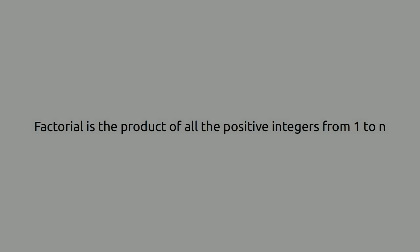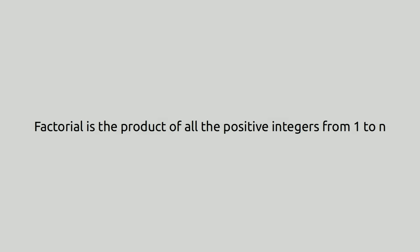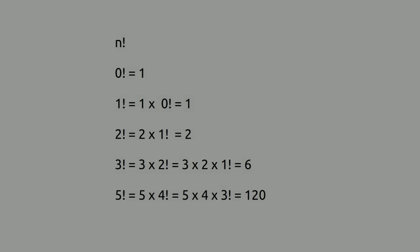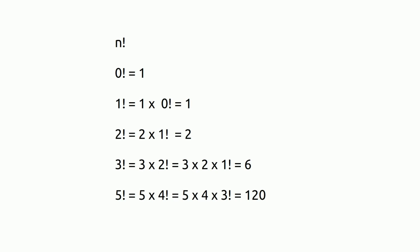Factorial function. Factorial is the product of all the positive integers from 1 to n. For example, 0 factorial is 1. 1 factorial is also 1. 2 factorial is 2 times 1, which is 2. 3 factorial is 3 times 2 times 1, which is 6.